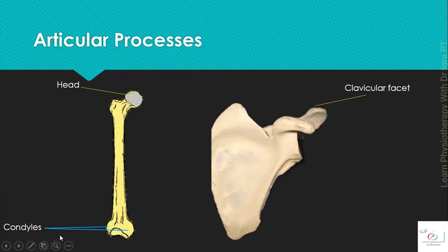Or the condyles are the rounded projections with the facet on it that articulates with the other bone. Here is the example of the condyles of the femur that articulates with the tibia to form the knee joint.